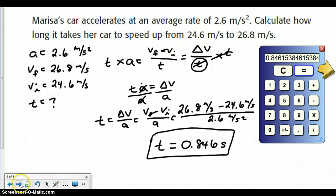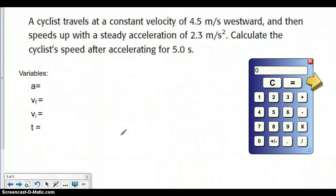Moving on to another acceleration problem. This time it says a cyclist travels at a constant velocity of 4.5 meters per second westward, and then speeds up with a steady acceleration of 2.3 meters per second squared. Calculate the cyclist's speed after accelerating for 5 seconds.